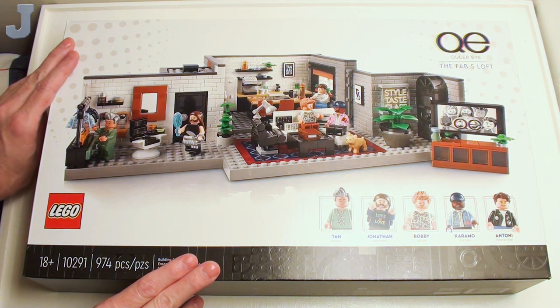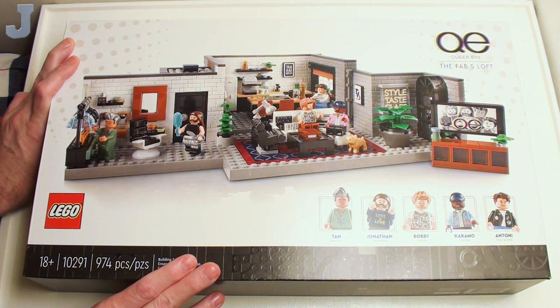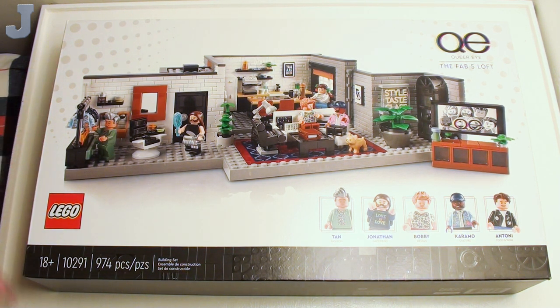Hey guys and gals, let's unbox and have a look at the bricks and pieces in the Queer Eye, the Fab 5 Loft by Lego, set number 10291, contains 974 bricks.